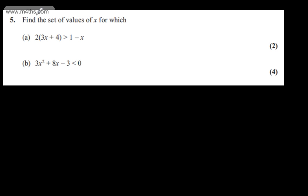This is question 5. We're asked to find the set of values of x for which (a) 2 multiplied by the quantity 3x plus 4 is greater than 1 minus x. That carries 2 marks. In part (b), 3x squared plus 8x minus 3 is less than 0, and part b carries 4 marks.